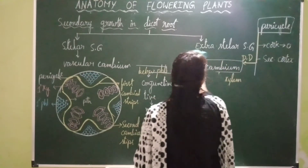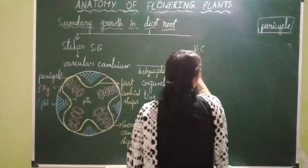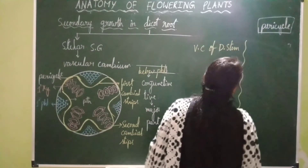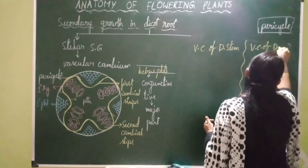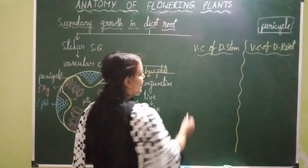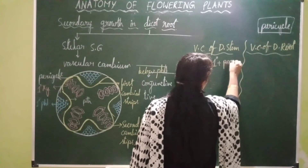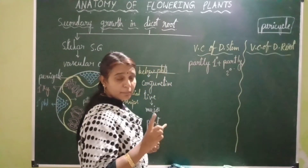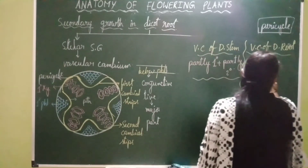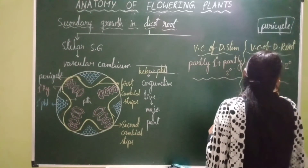Now let's make a comparative study of vascular cambium in dicot stem and dicot root. The vascular cambium of dicot stem is partly primary and partly secondary in origin — intrafascicular vascular cambium is primary in origin and interfascicular vascular cambium is secondary in origin. Whereas the vascular cambium of dicot root is completely secondary in origin, formed only during secondary growth.